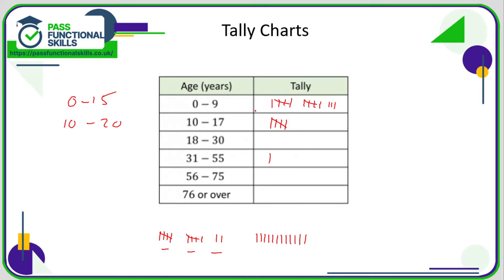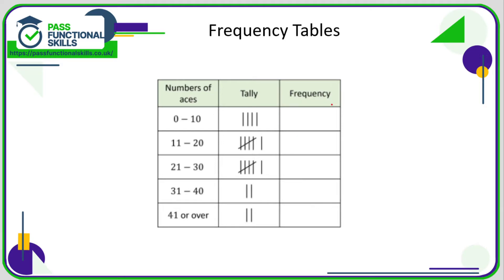For example, in the 0 to 9 category: 5, 10 — that is 13. Often with tally charts we put a frequency column to the right to turn the tallies into numbers. So that's 4, that's 6, that's 6, that's 2, that's 2. Notice there's no overlap in the categories, and again there's the option for 41 plus going up to infinity. We've broken it into groups that don't overlap, we've got tally marks, and then a frequency column to turn them into meaningful numbers.